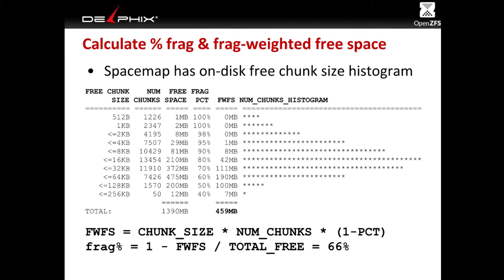We multiply the free space by the inverse of this fragmentation percentage to get the fragmentation-weighted free space. So for the 1K chunks, we have 2 megs of space but it's 100% fragmented, so it counts zero. At 128K, we have 200 megs of free space — it counts half — so we count 100 megabytes. Adding these all up gives us 459 megabytes of fragmentation-weighted free space.